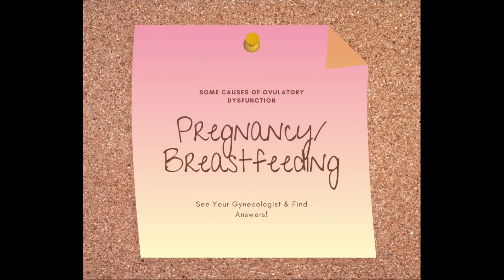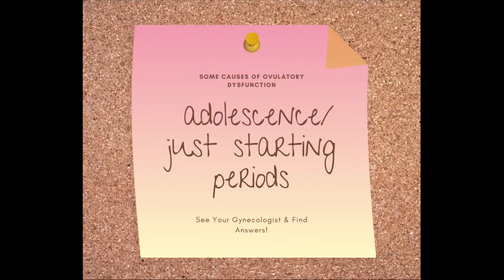Pregnancy, of course — obviously we don't ovulate when we're pregnant. In addition, ovulatory dysfunction can occur with breastfeeding. Breastfeeding can reduce ovulation because we're making so much of the hormone that makes milk, called prolactin, that we may not ovulate. So we can see what's called anovulatory bleeding — bleeding between periods — that can be anything from spotting all the way up to really heavy bleeding. Anovulatory bleeding can also occur in women who are young and just starting their menstrual periods.